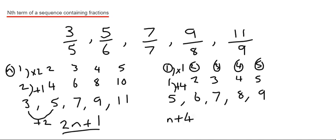So we're nearly there now. So we just need to write down our final answer. So we do it like this. So we put 2n plus 1 on the numerator and we write n plus 4 on the denominator. So that is the nth term for our fractional number sequence.